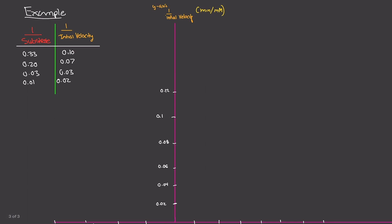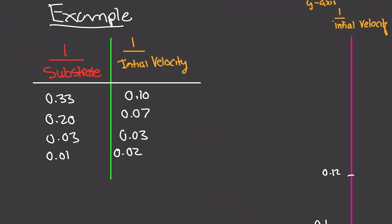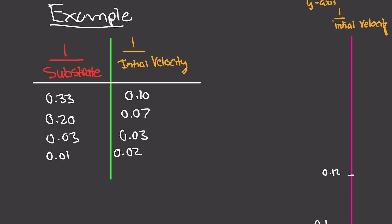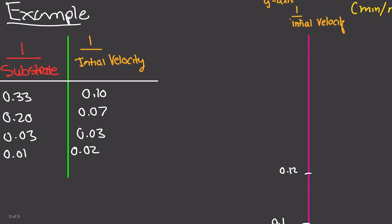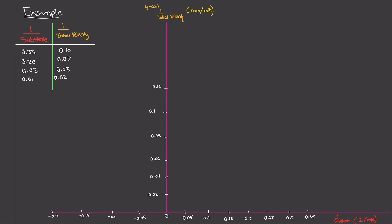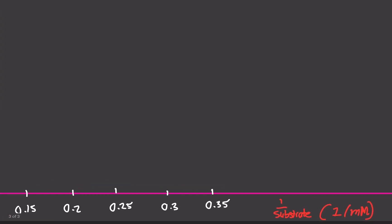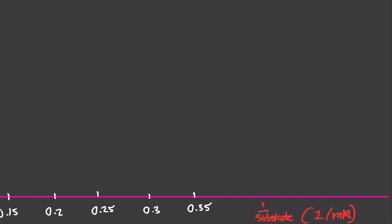Let's do an example problem. We're given some numbers as you would see on an exam. You'll know this is a Lineweaver plot because the X values are one over substrate and the Y values are one over initial velocity. If it were just substrate and initial velocity without the reciprocals, it would be Michaelis-Menten. The Y-axis units are minutes per millimolar, and the X-axis units are one over millimolar.